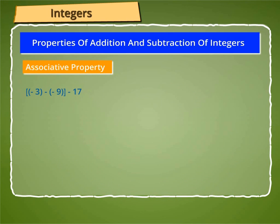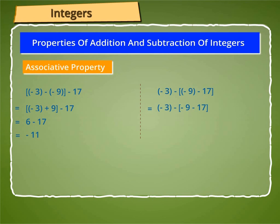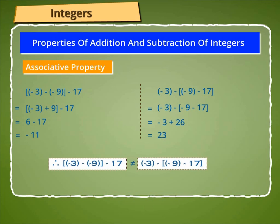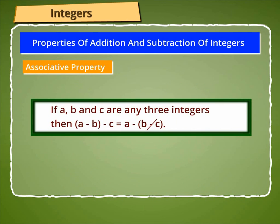Again, (minus 3 minus minus 9) minus 17 is equal to minus 3 plus 9 minus 17, which equals 6 minus 17, which equals minus 11. And minus 3 minus (minus 9 minus 17) is equal to minus 3 minus (negative 26), which equals minus 3 plus 26, which equals 23. Therefore, (minus 3 minus minus 9) minus 17 is not equal to minus 3 minus (minus 9 minus 17). Thus, subtraction is not associative for integers. Hence, if A, B, and C are any three integers, then (A minus B) minus C is not equal to A minus (B minus C).